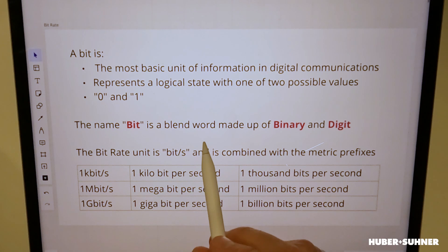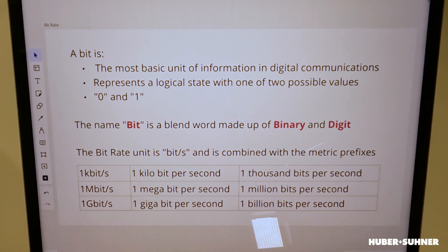So let's start off with the most commonly used one — the bit rate. A bit is the smallest and most basic unit of information in digital communication. It represents a logical state with one of two possible values: 0 and 1. In other words, it is binary, and that's also where the name comes from, because the name 'bit' is a blend word made up of 'binary' and 'digit'. Now all digital information is actually made up of a binary stream — in other words, a stream of bits. And that is what the bit rate actually describes: how many bits per second are transferred.